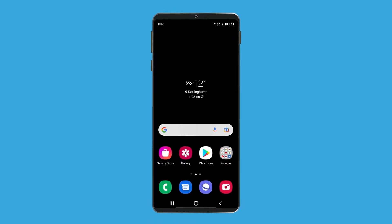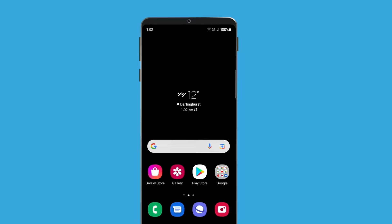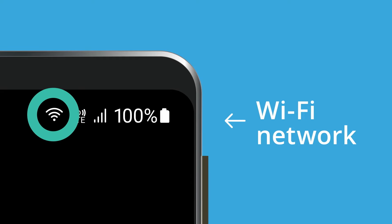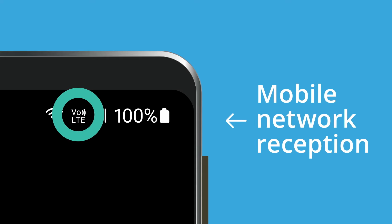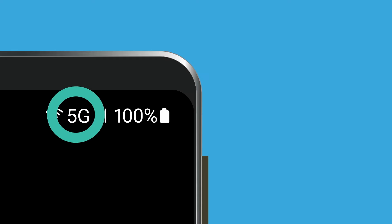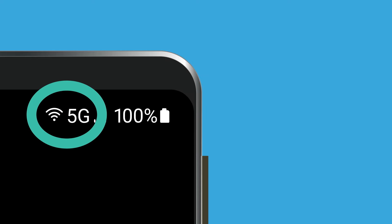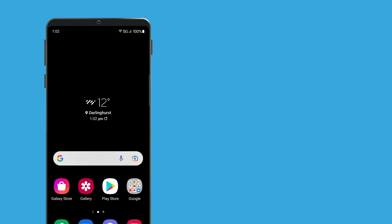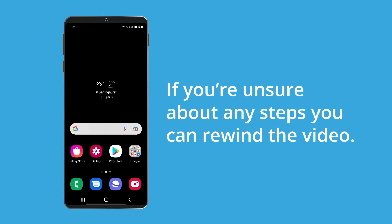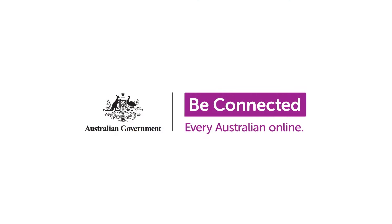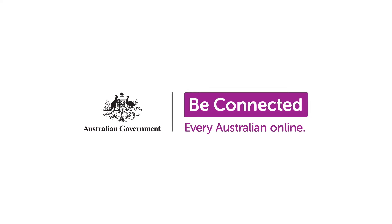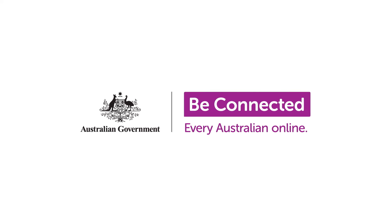Once you're all set up, you can tap Finish. The home screen will appear and you're ready to start exploring your phone. To check the phone is connected to the internet, look for the Wi-Fi symbol. If you have a SIM card inserted and a mobile data plan, you'll also see the LTE, 4G or 5G symbol, depending on your model phone. If both symbols are white, your phone is connected to Wi-Fi and the mobile network, and your Android phone is ready to use. If you're unsure about any steps, you can rewind the video. If you're ready to move on, there are many other courses to explore on Be Connected to help you get the most from your Android phone.